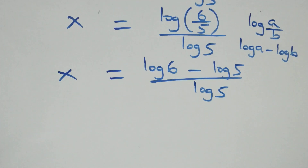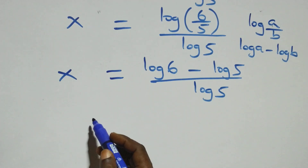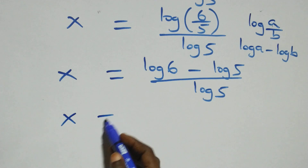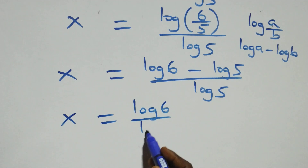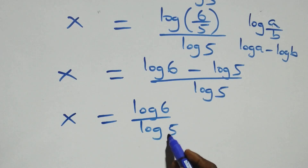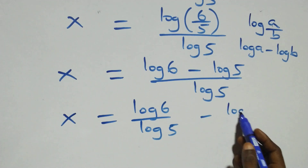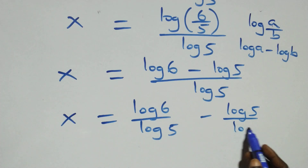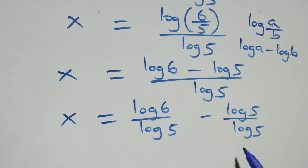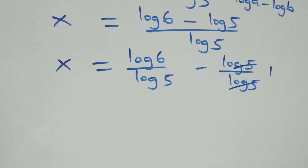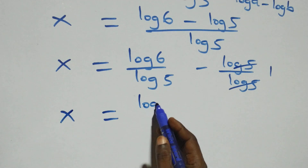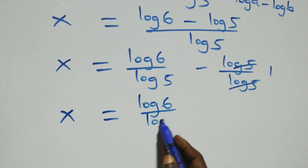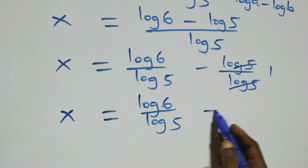Then the next step here, we separate this into two fractions and we have x equals to log 6 over log 5 minus log 5 over log 5. Then here log 5 cancels each other, we have one left, which implies we have x equals to log 6 over log 5 minus 1.